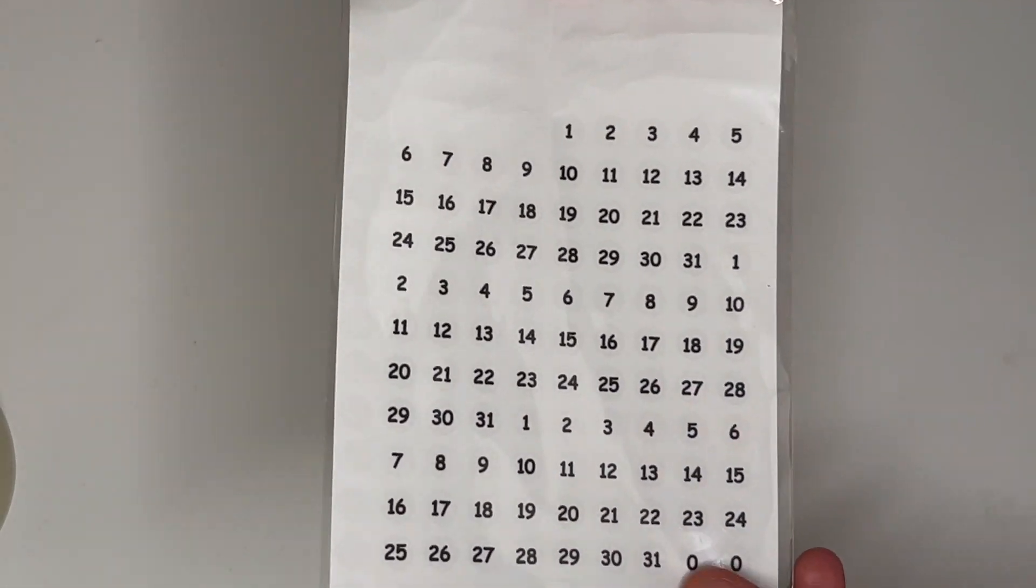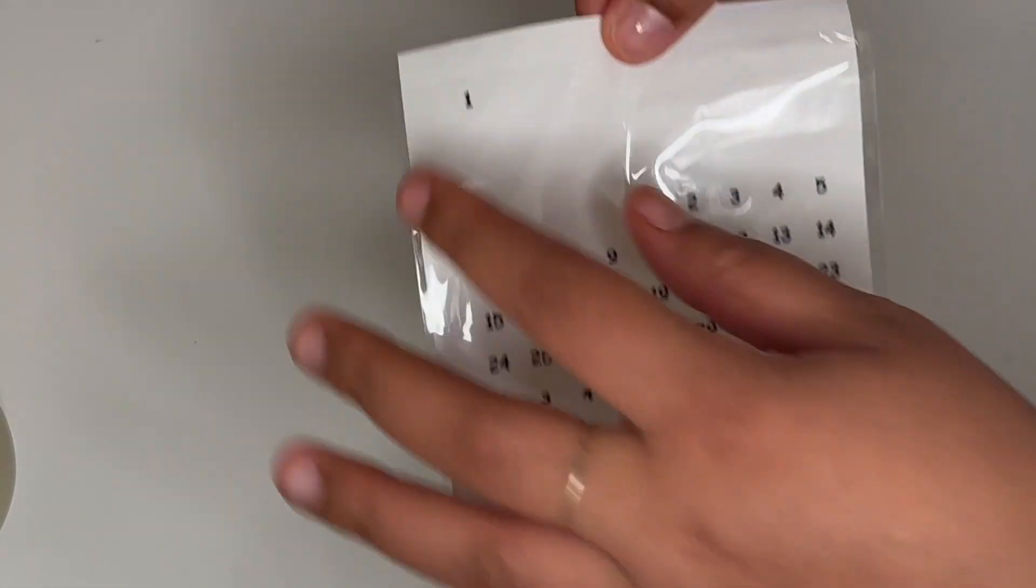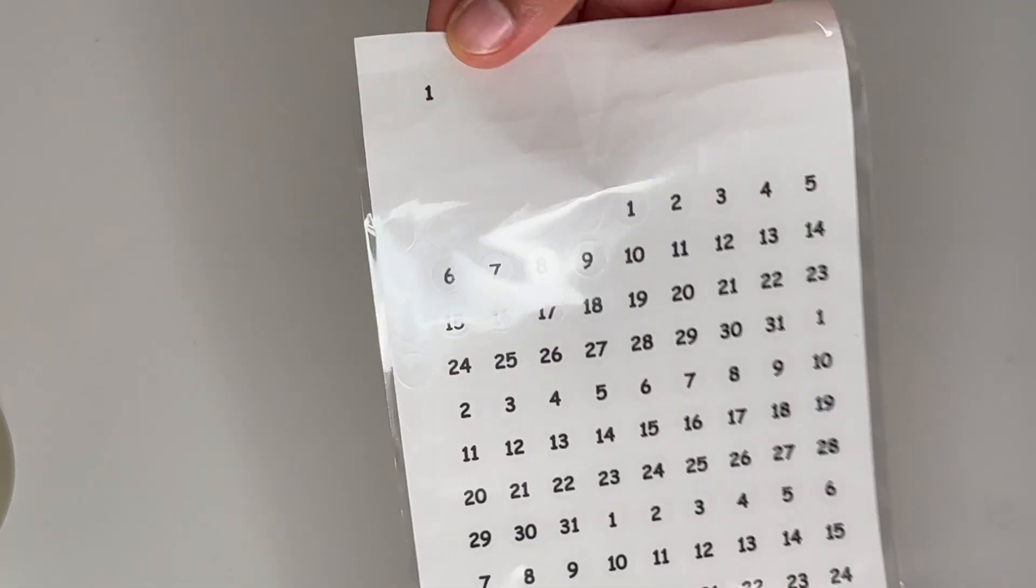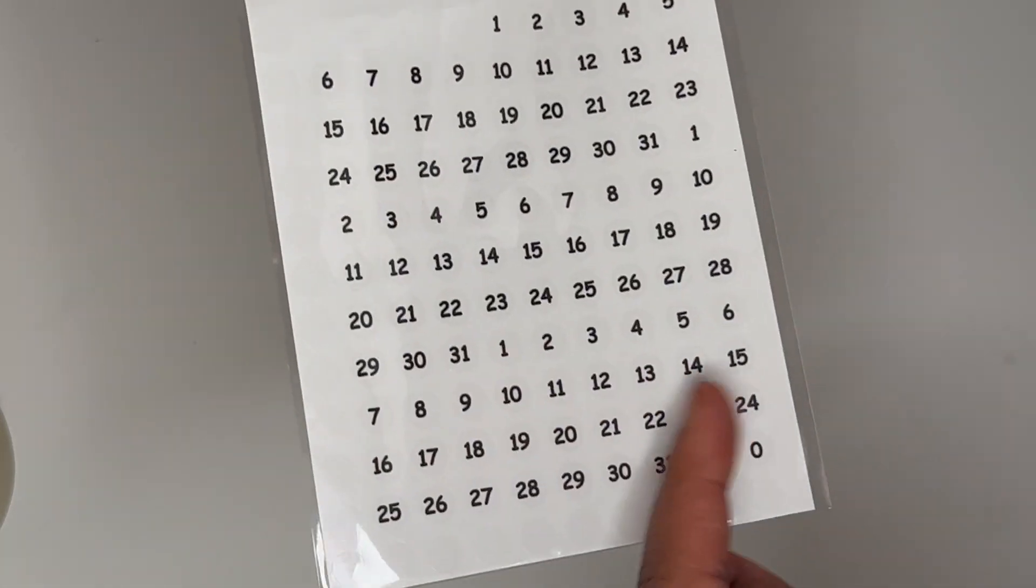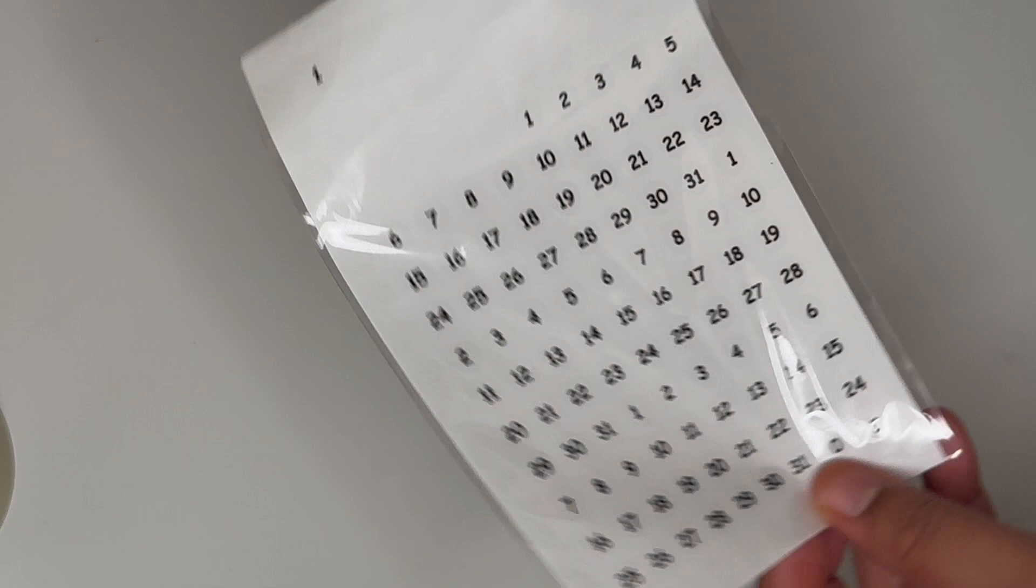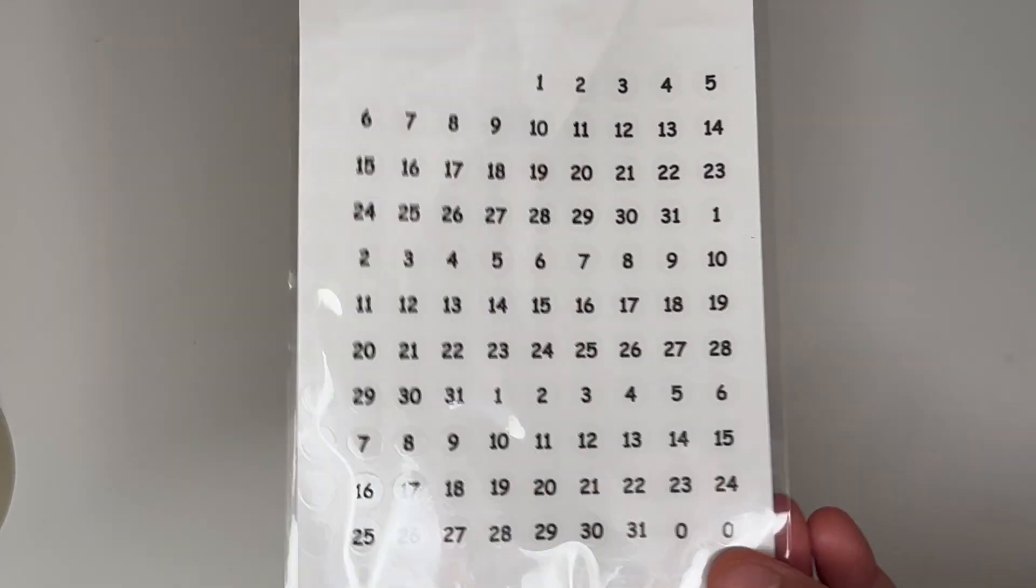I also got these which are number stickers, they're transparent or translucent and I use these to label my undated planner which I will show you at the end, I just didn't bring it up with you.